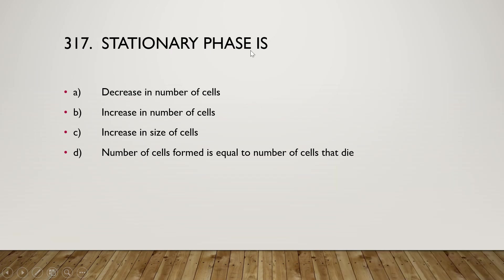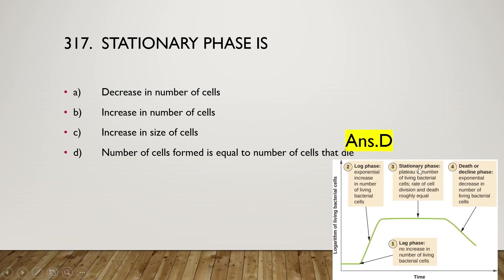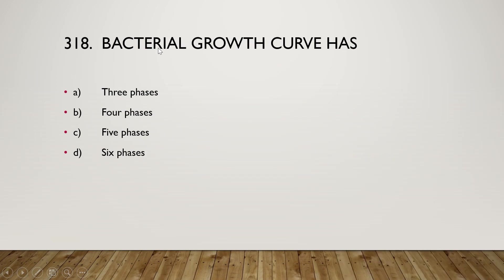The stationary phase is characterized by number of cells formed equal to number of cells that die — right answer is option D. In the stationary phase, the rate of cell division and death are roughly equal, forming a plateau. The bacterial growth curve has four phases — right answer is option B: lag, log, stationary, and decline phases.